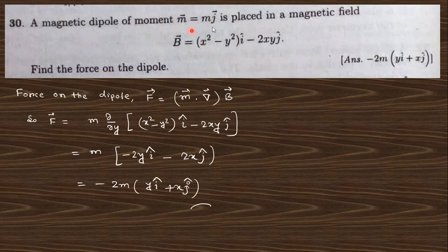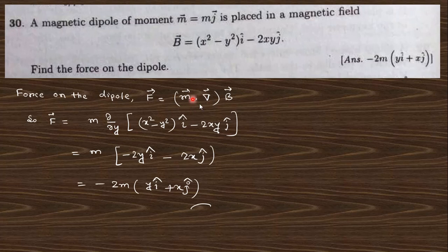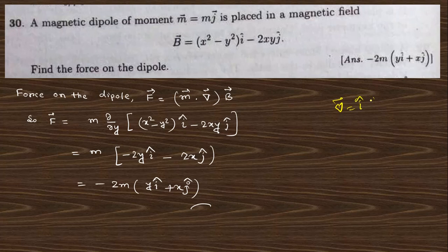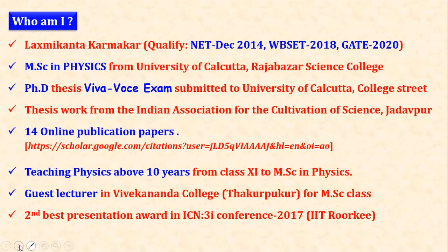Next: A magnetic dipole m = mĵ is placed in a magnetic field. Find the force on the dipole. The force on a dipole is F = ∇(m · B). Since m is only in the ĵ direction, this becomes m times ∂/∂y applied to B. In Cartesian coordinates, the del operator is î(∂/∂x) + ĵ(∂/∂y) + k̂(∂/∂z). Dotting with m = mĵ selects the ∂/∂y component, so differentiating B with respect to y gives the final answer.